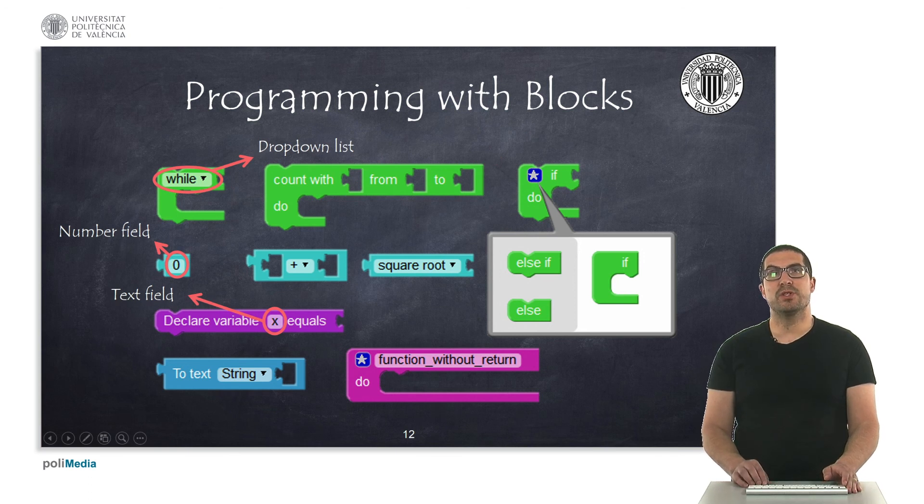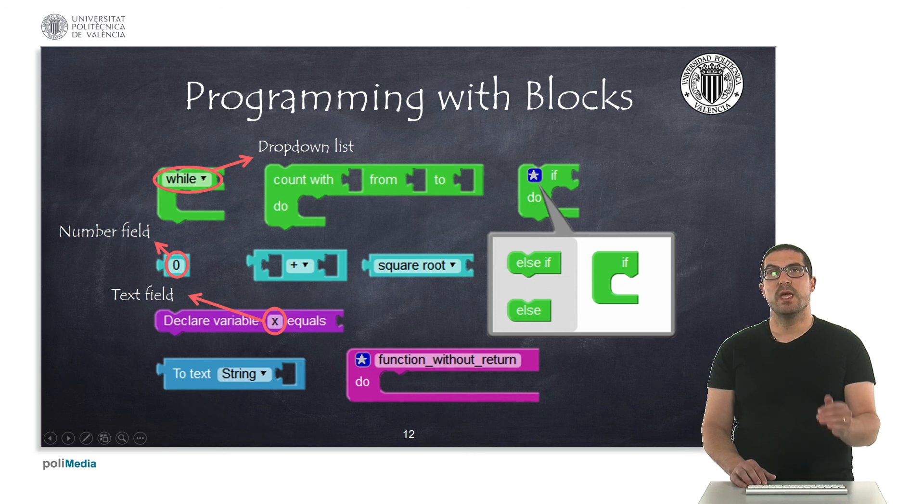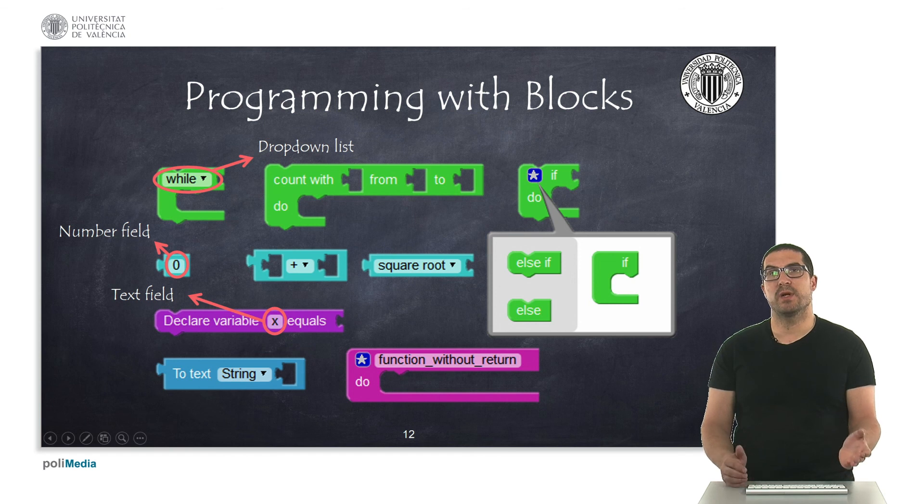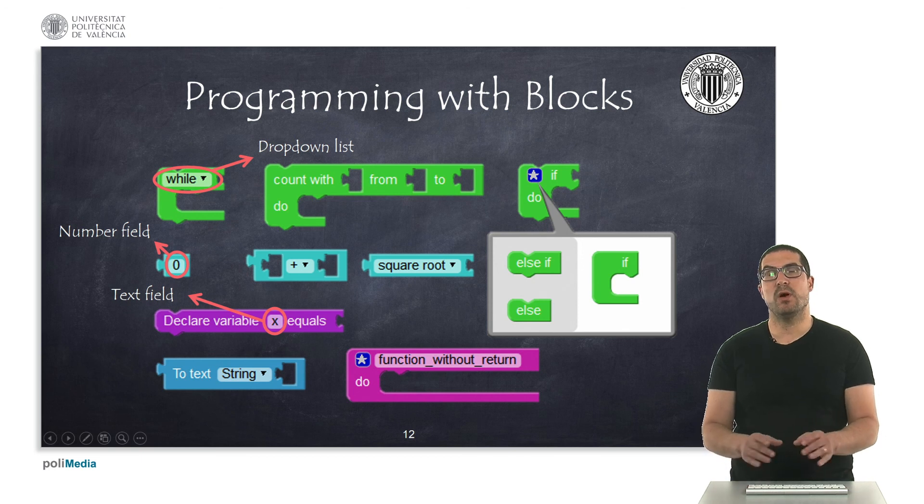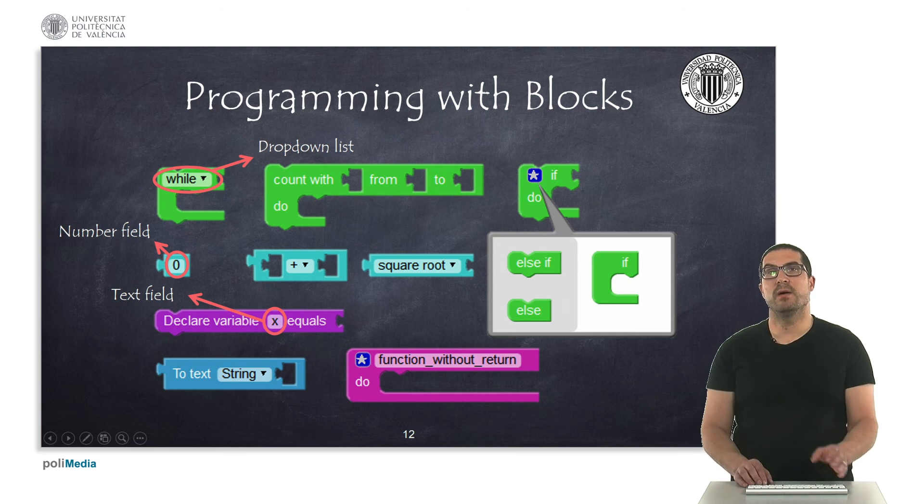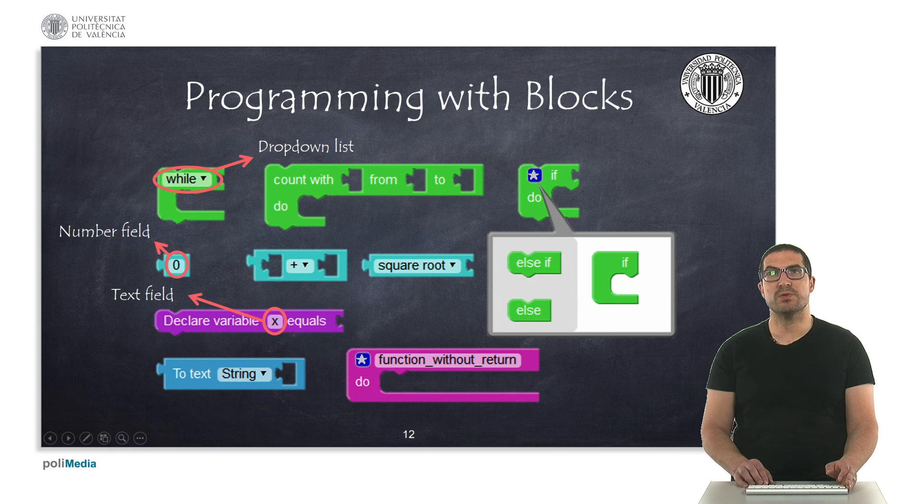Also, some instructions have, for instance, a drop-down list in which you simply configure the several options regarding your instructions. Some of them have number fields and some of them have text fields. All these kinds of fields allow you to modify somehow or introduce more information to your instruction.